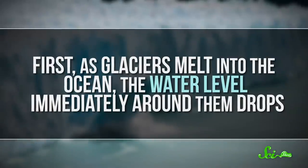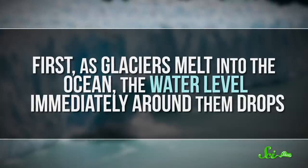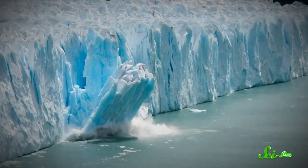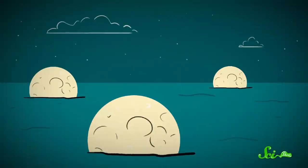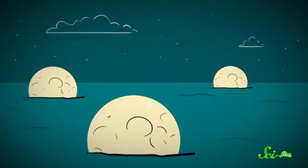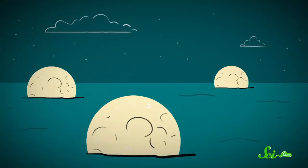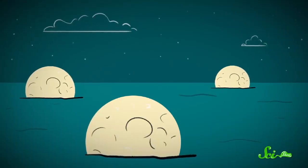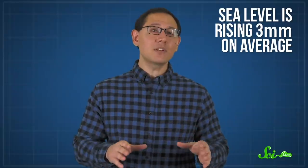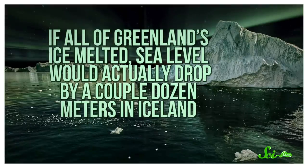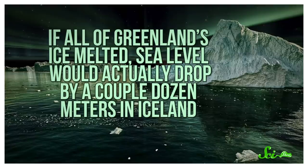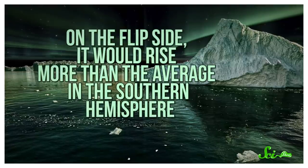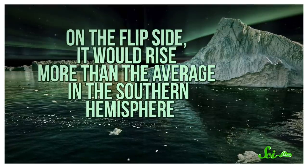First, as glaciers melt into the ocean, the water level immediately around them drops. The reason is, glaciers are so massive that they actually have a significant gravitational pull. It's like having a bunch of mini-moons on the surface of the Earth. They pull water toward them, so when that mass melts away, the surrounding water recedes. For instance, sea level is rising 3 millimeters on average. But if all of Greenland's ice melted, sea level would actually drop by a couple dozen meters in Iceland. But on the flip side, it would rise more than the average in the southern hemisphere.